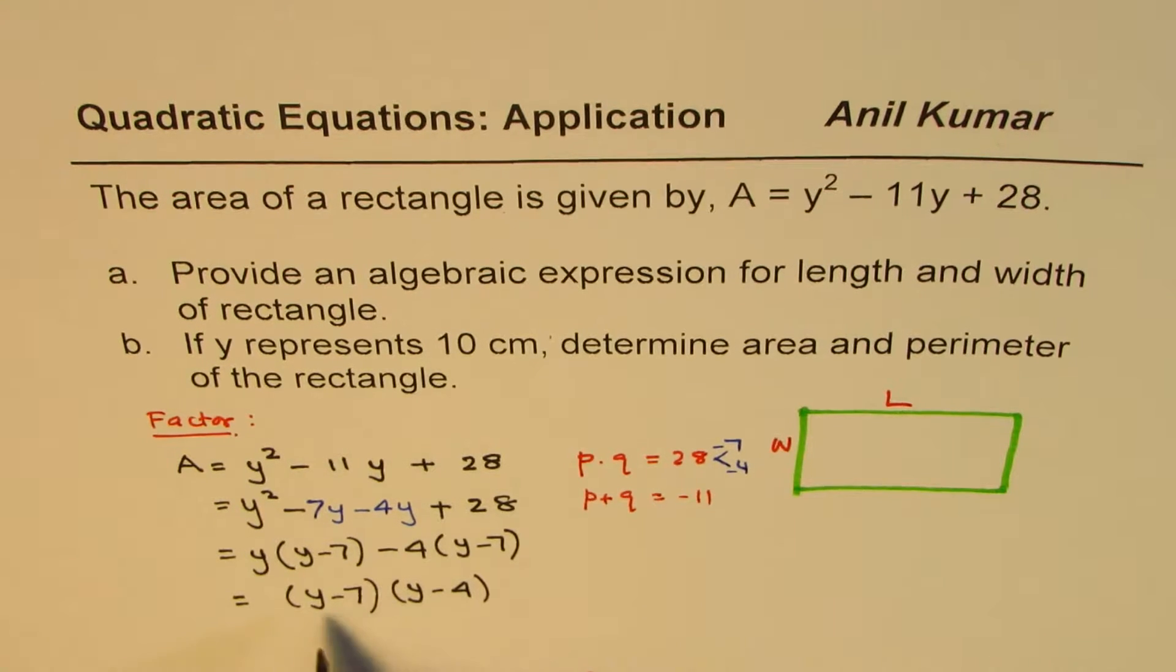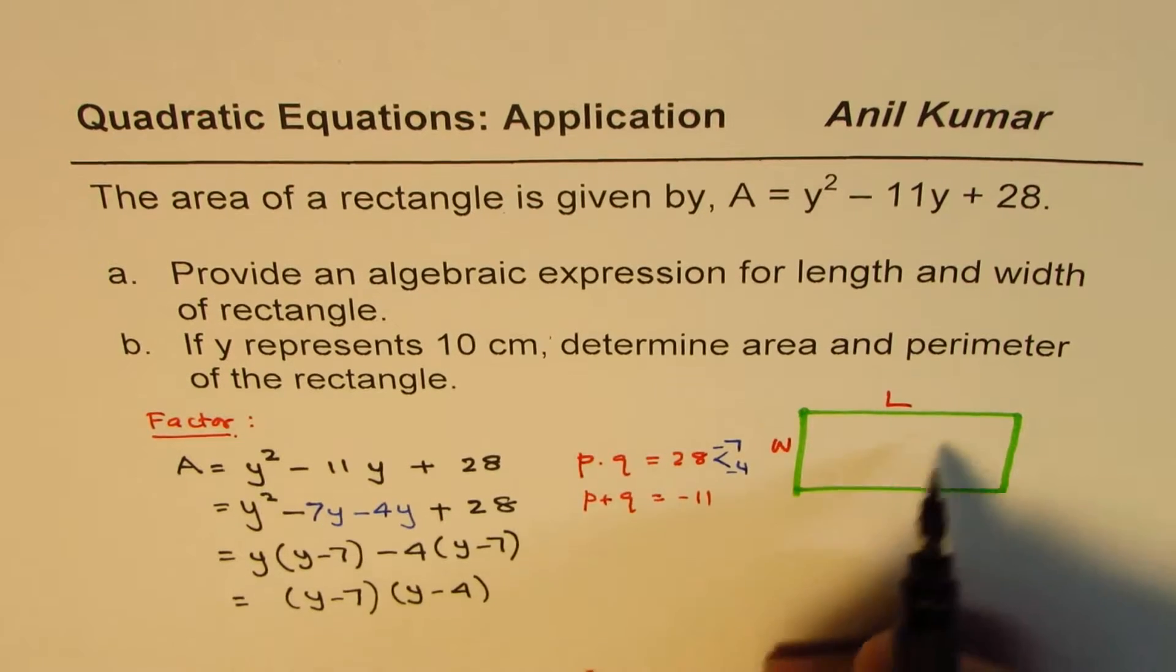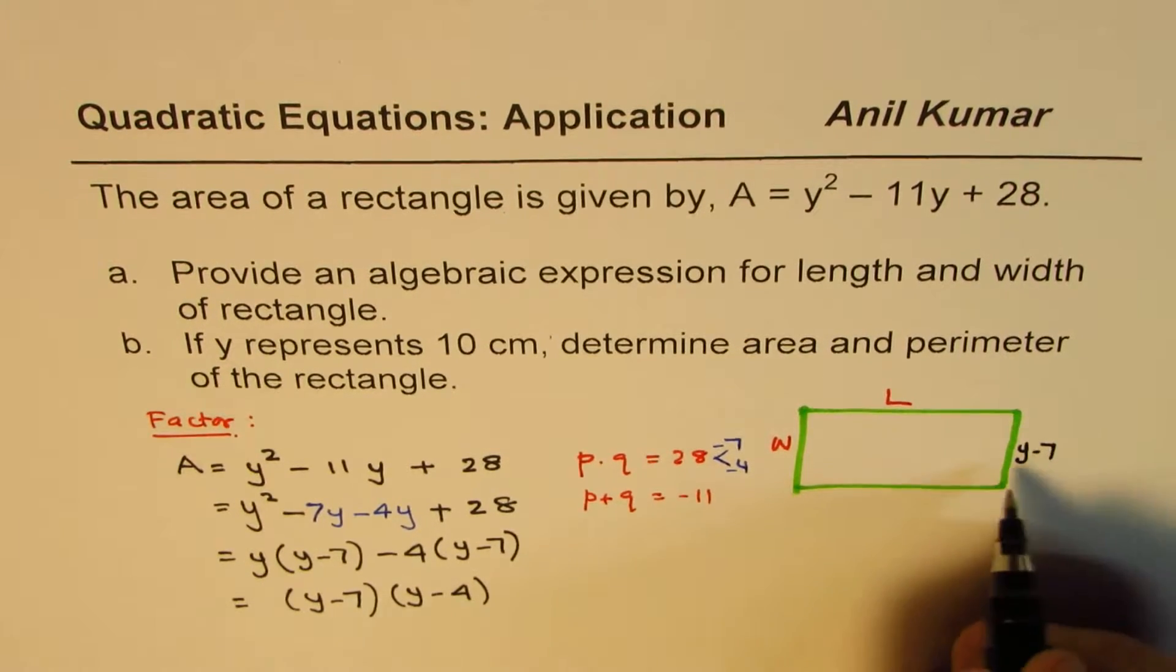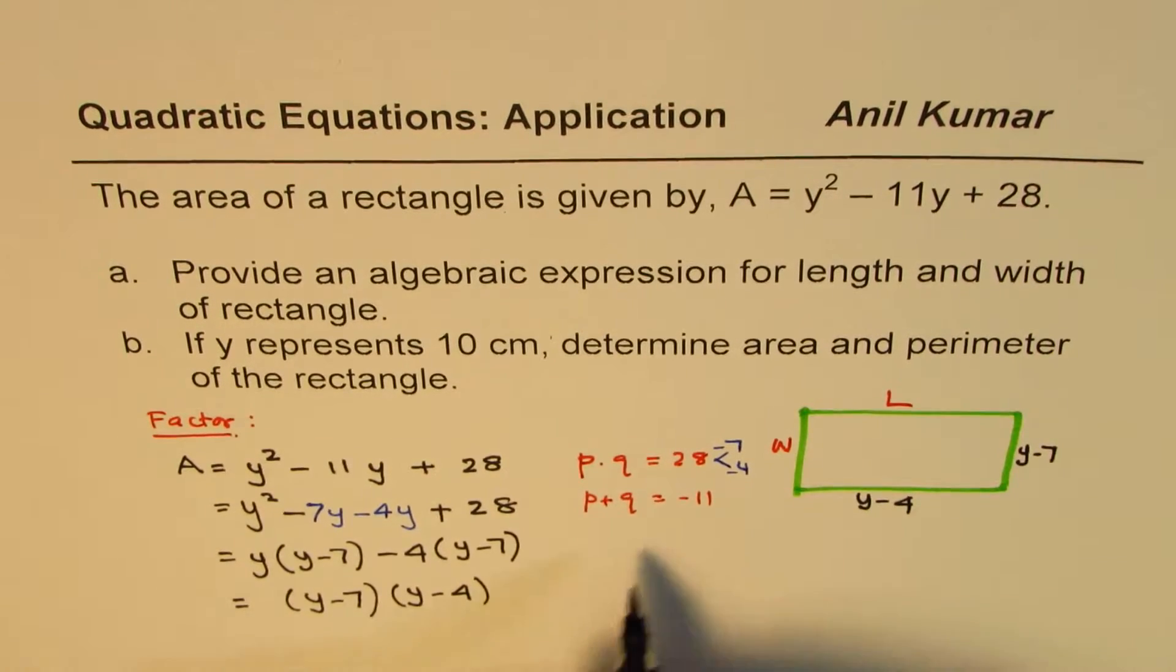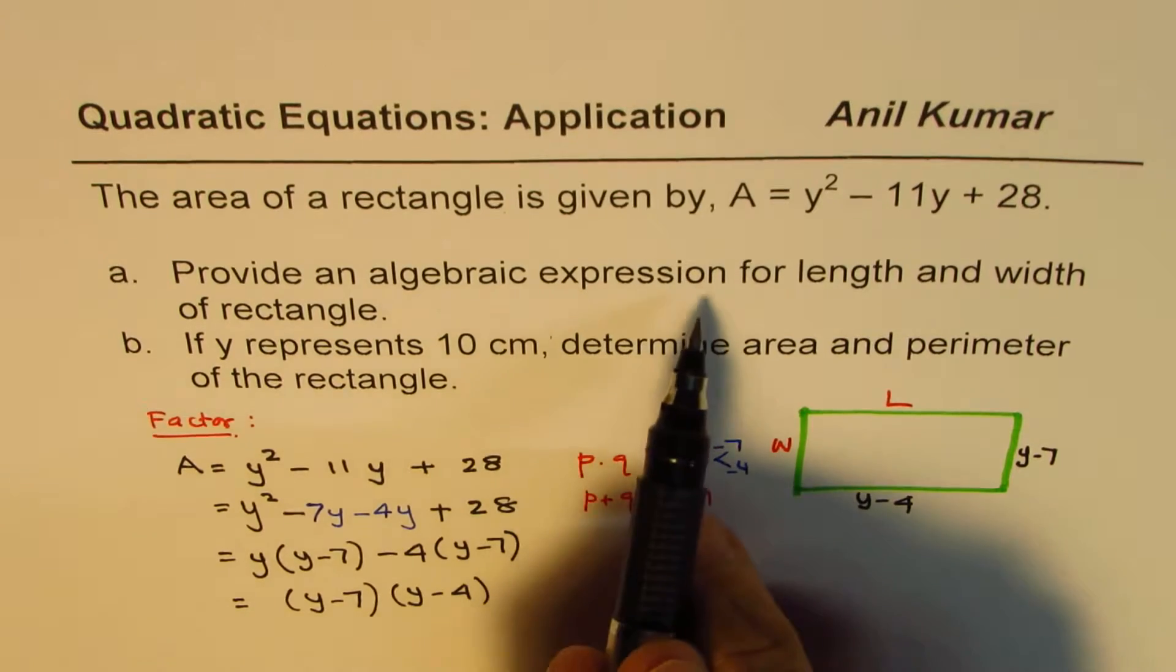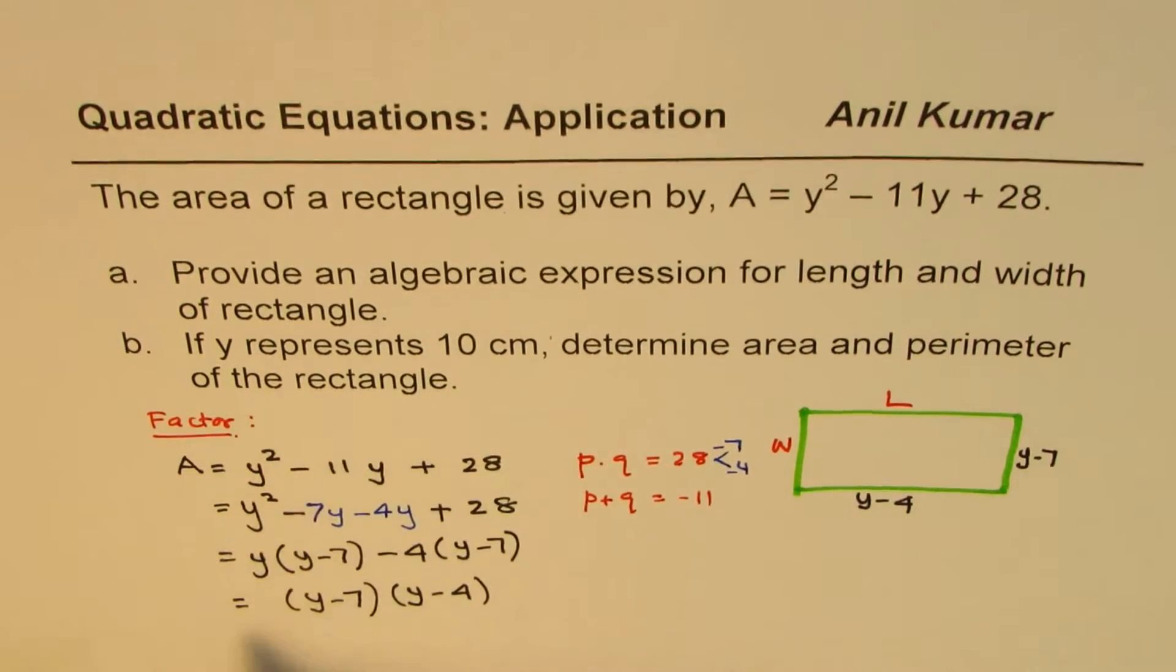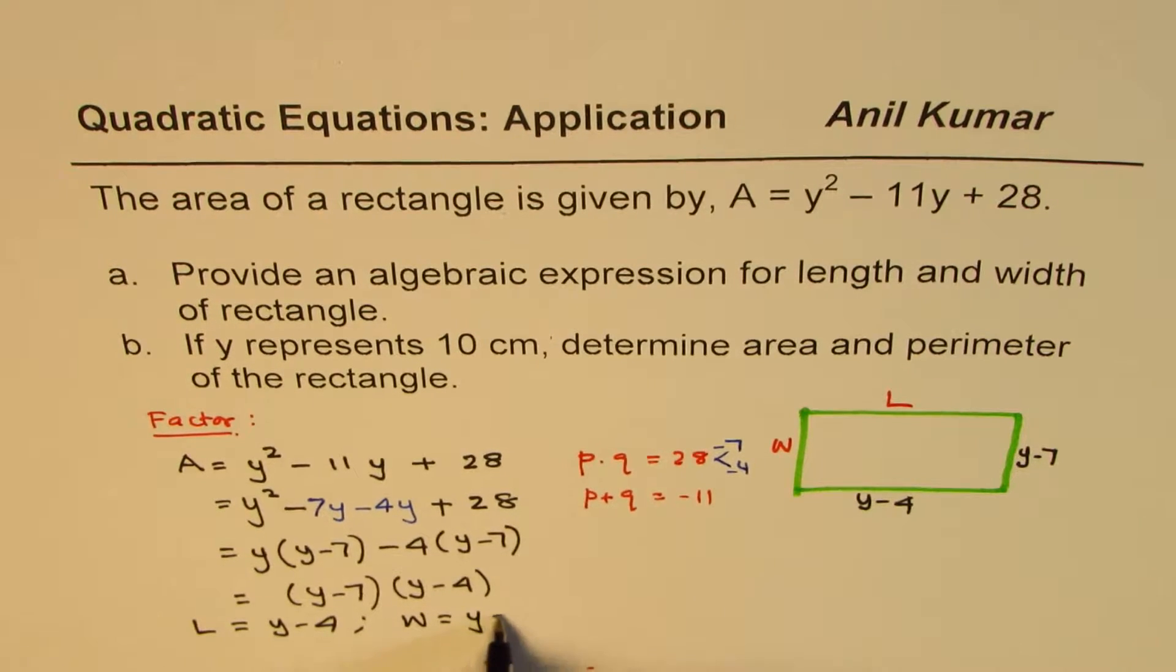Do you get the idea? So each could represent a side of a rectangle. So in this case, let me say this is Y minus 7 and this side is Y minus 4. Now provide an algebraic expression for length and width of rectangle. So from here, we can say length is equal to Y minus 4 and width is equal to Y minus 7.